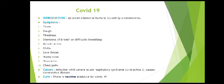COVID-19 is an acute disease in humans caused by a coronavirus. Symptoms include fever, cough, tightness and shortness of breath, muscle aches, chills, sore throat, runny nose, headache, and chest pain. COVID-19 is caused by infection with severe acute respiratory syndrome coronavirus 2 (SARS-CoV-2). There is a vaccine available for COVID-19.